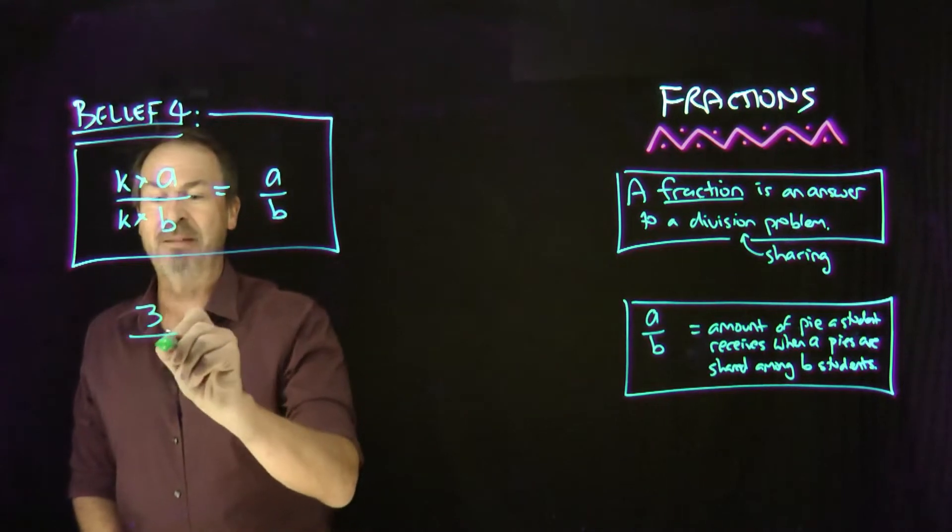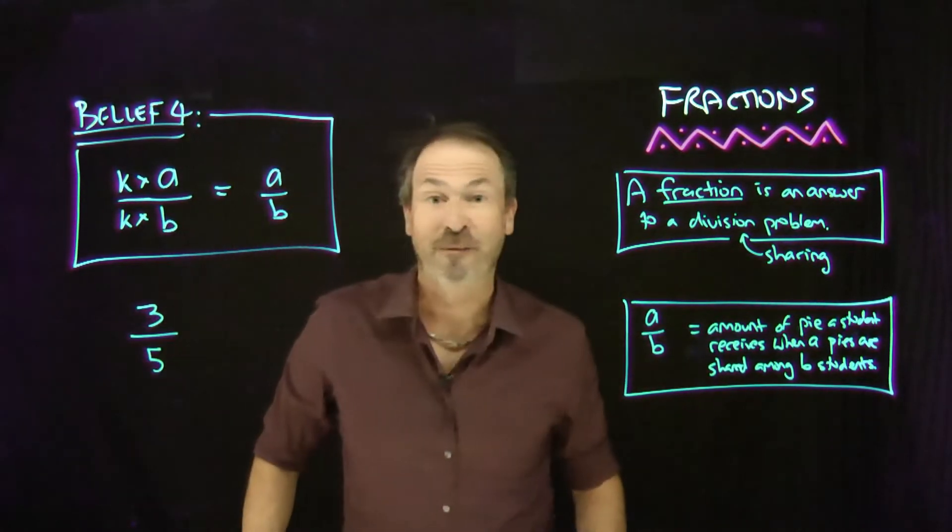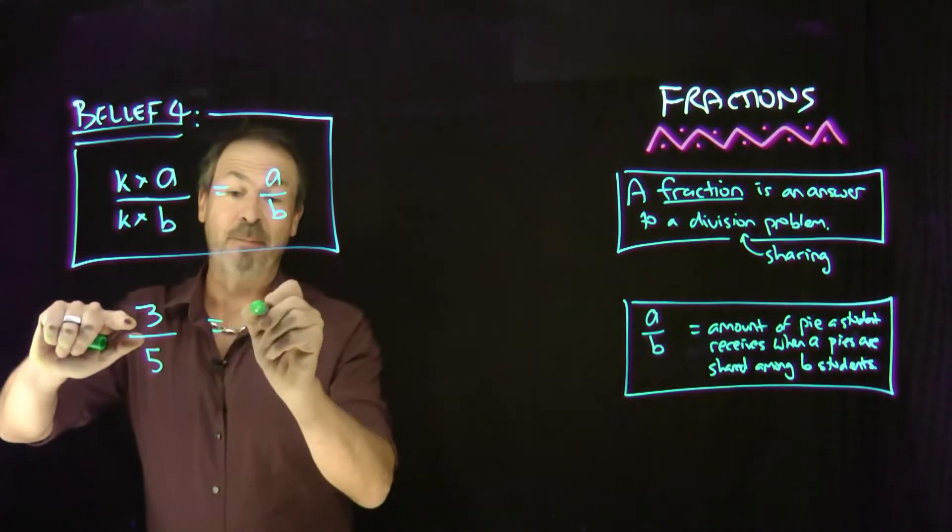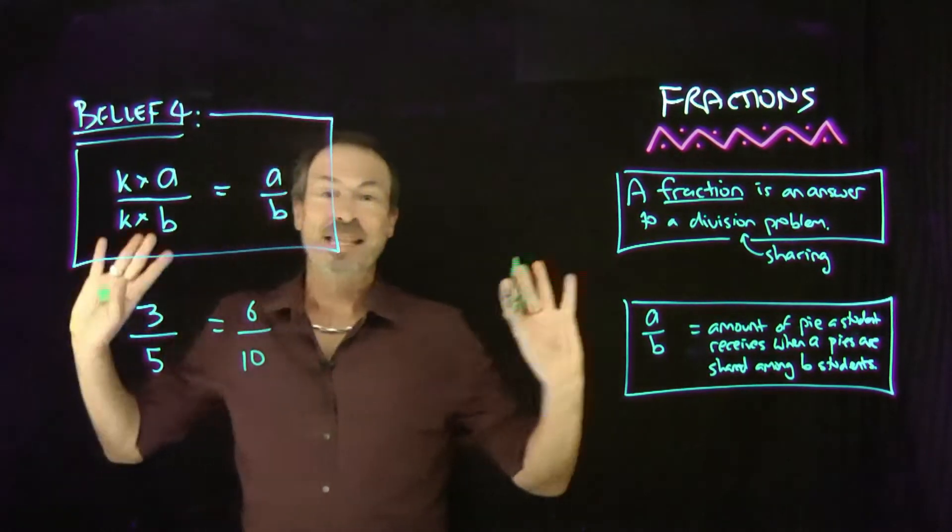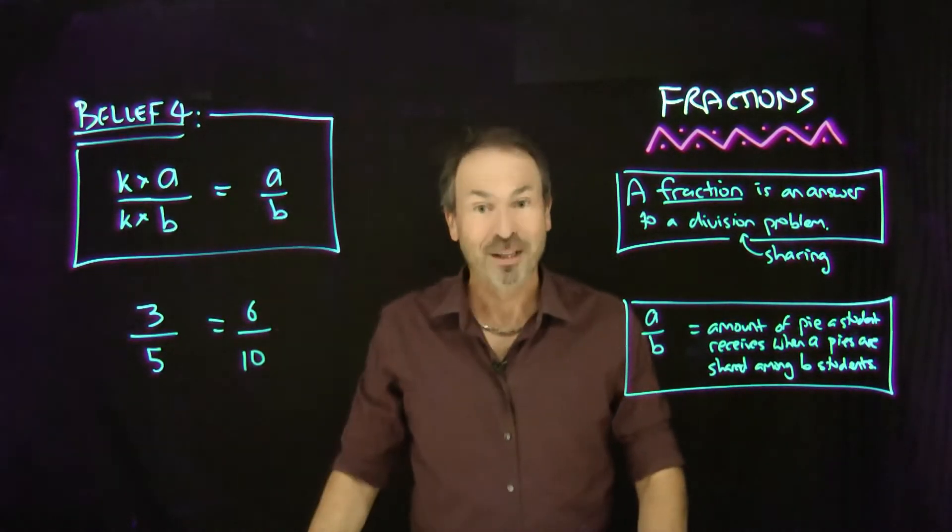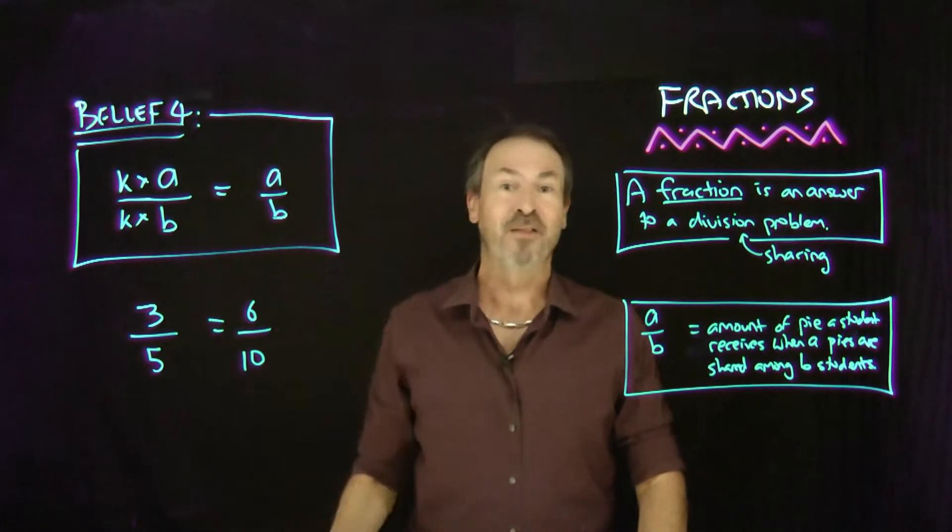So for example, let's say if I had three pies for five students, the fraction three fifths. If I decide to double the number of pies and double the number of students, nothing's changing. This is the same result. Six tenths is actually the same, going to be the same result as three fifths. They're the same fraction.